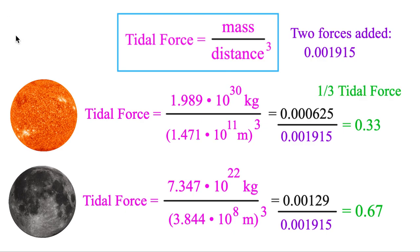And there we have it. The Sun does contribute one-third to Earth's tides, or 33%. And the Moon still does the heavy lifting with two-thirds, or 67%. So it's super cool to see those numbers work out in that balance there.